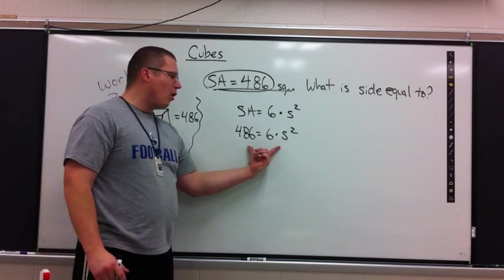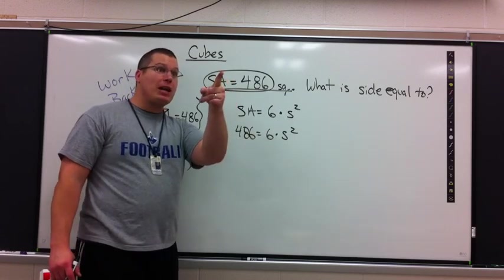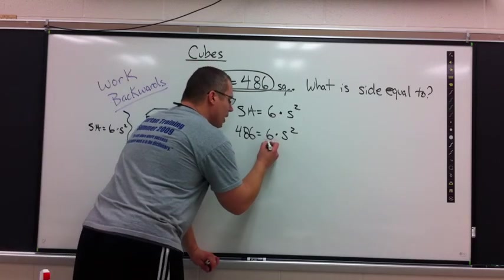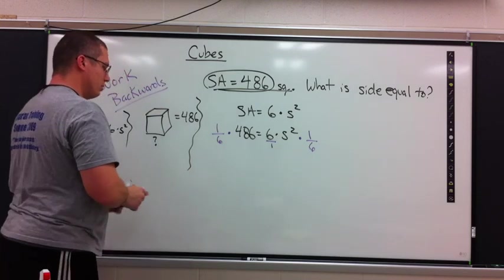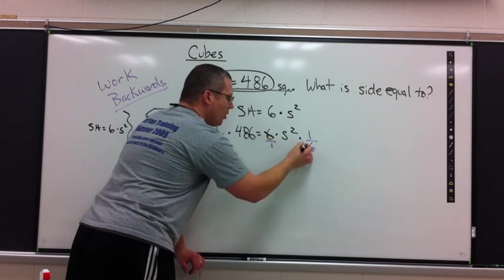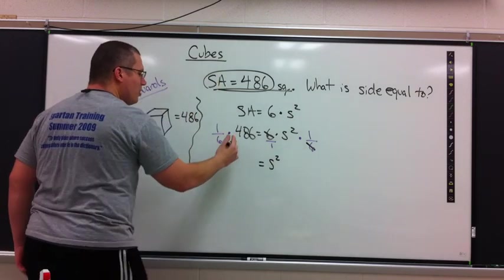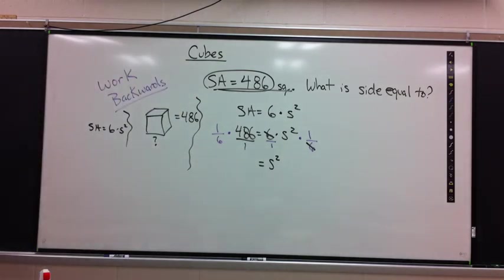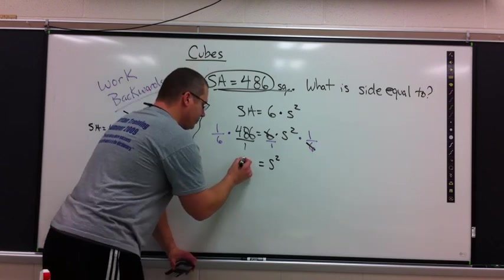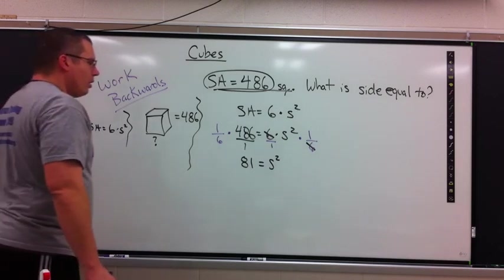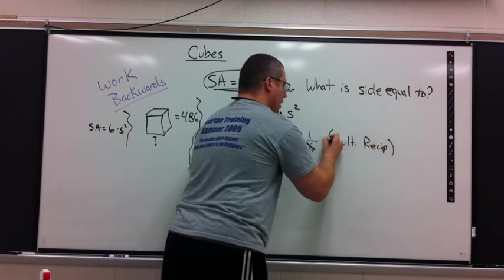Let's do some solving. I need to get S all by itself. I'm going to get rid of the multiplied number. How do I get rid of a multiplied 6? Multiply by the reciprocal of it. 6 is 6 over 1 times this side by 1 over 6 times this side by 1 over 6. The 6's cancel out. What is the only thing I have left on the right-hand side? S to the second power. What do I have on this side? 486 times 1 over 6 equals 81.